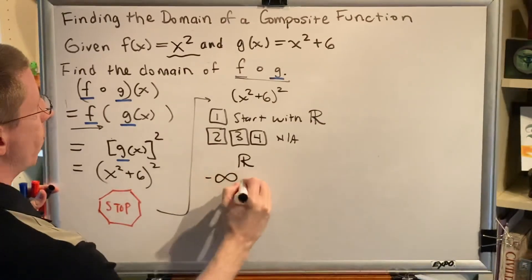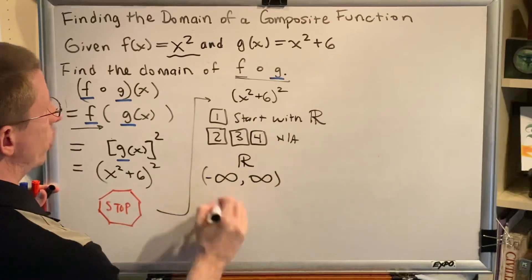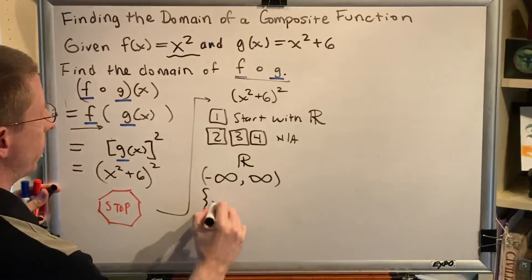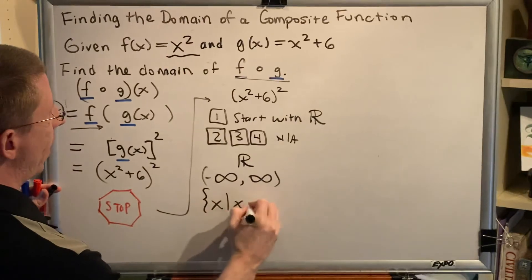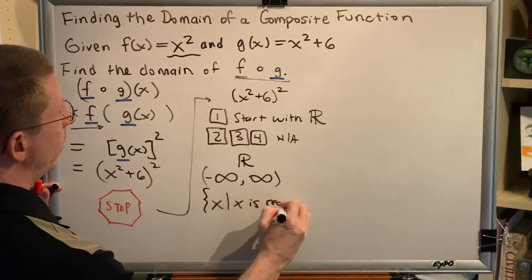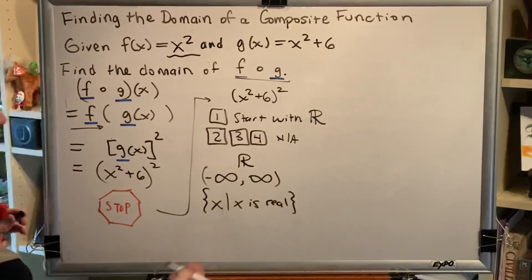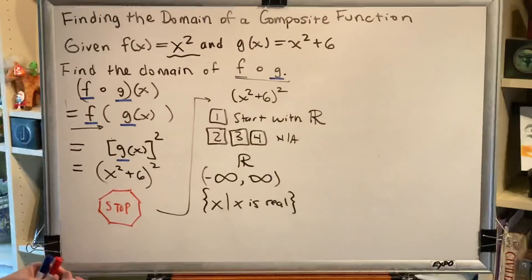As an interval, this would be from negative infinity to infinity. As a set, we would say the set of all x such that x is real and then there would be no restrictions, therefore indicating all real numbers.